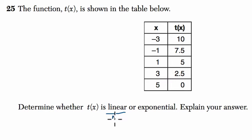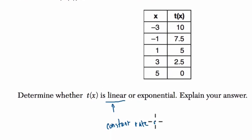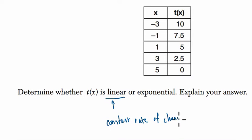Well, linear has a constant rate of change, a constant slope. Exponential does not have a constant rate of change. It has an exponential rate of change. In other words, it has a constant amount that you're multiplying by or dividing by. So instead of adding by a constant rate, you're multiplying by a constant value.